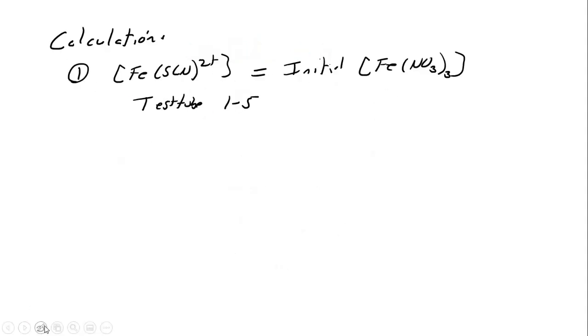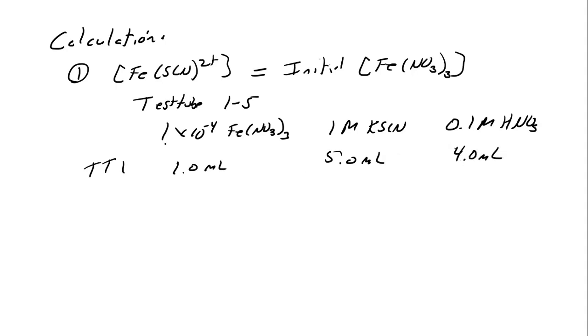So this is referring to test tubes one through five. But this is just like the iodine clock reaction we just did last week, where test tube one has, I have the 1 times 10 to the negative 4 FeNO3, I have 1 molar KSCN, and I have 0.1 molar HNO3. So test tube one has 5 mls of this and 4 mls of this.